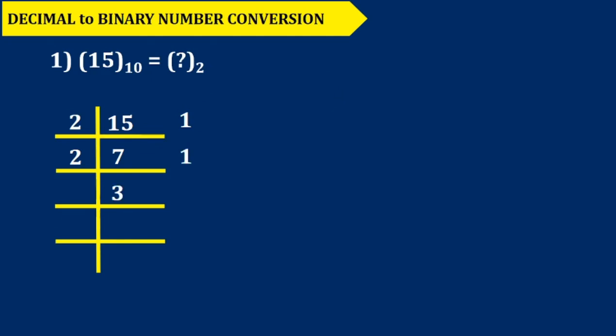2 times 3 is 6, so again we get 1 as a remainder. 3 is again divisible by 2: 2 times 1 is 2, and again we get a remainder of 1. Now 1 is indivisible by 2, so for the last time we finally get the remainder 1.